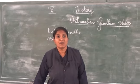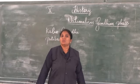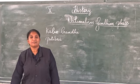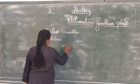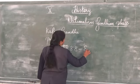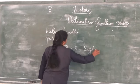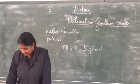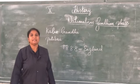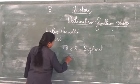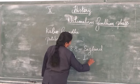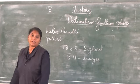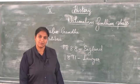Gandhi sailed to England in the year 1888 for the study of law. After becoming a barrister, in June 1891 he became a lawyer. He returned to India as a firm believer in the British sense of justice and fair play.